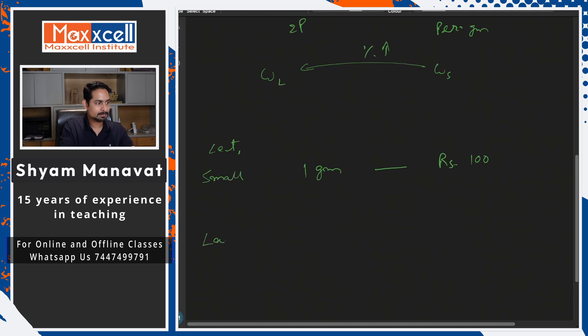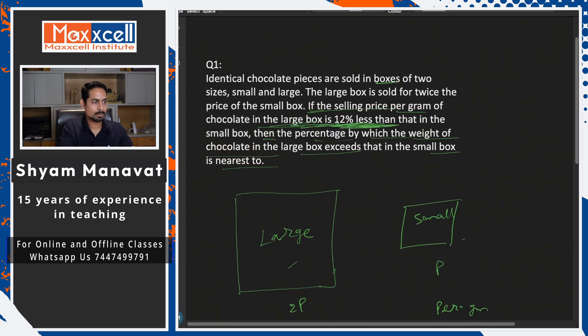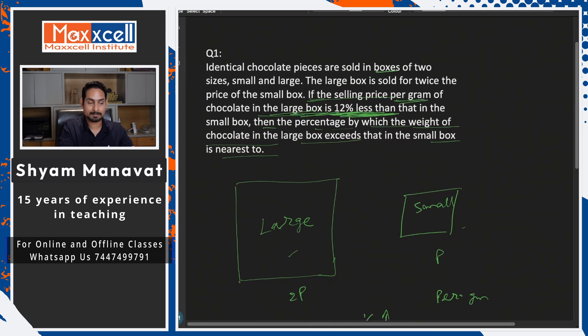And assume per gram for 100 rupees so that percentage calculation will be easy. I can apply the percentage on this for the small box. Now, as per the question, the large box per gram weight,